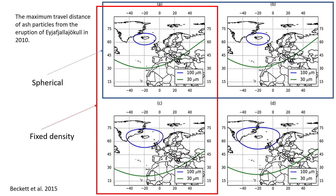Here is another example showing different numerical simulations where a variety of input data for the total grain size distribution has been used — in one case particles are spherical, or a variety of different densities has been used. We can see how the contours of concentration for the different particles extend farther from the source, which in this case is the volcano Eyjafjallajökull in Iceland.